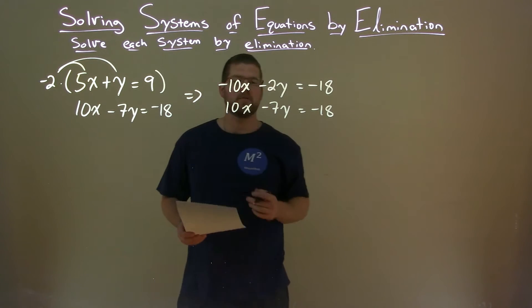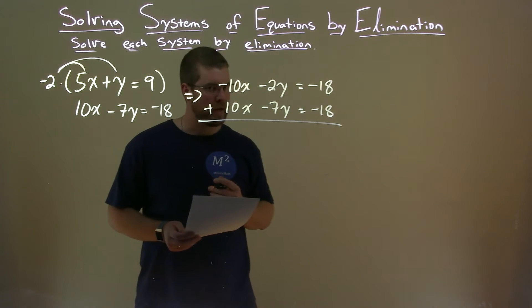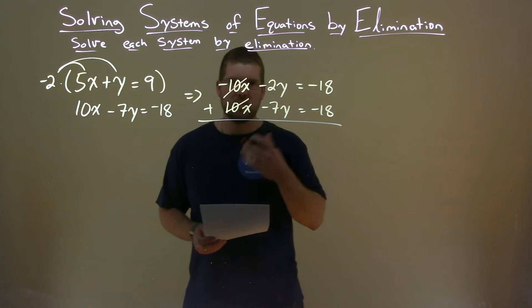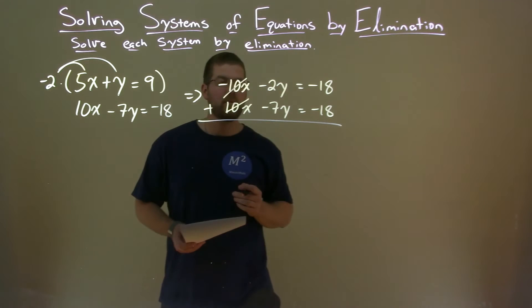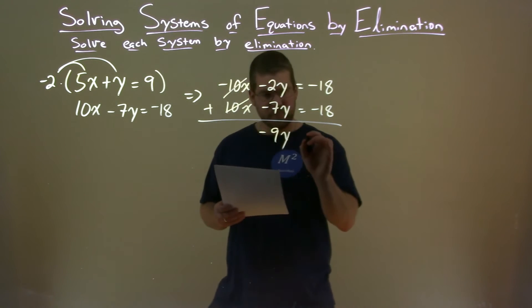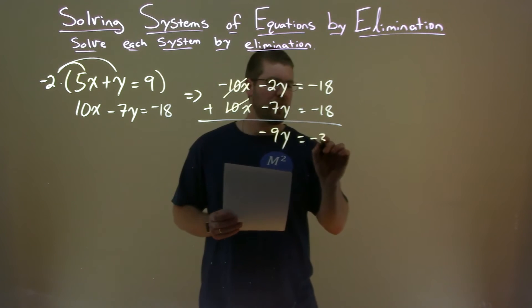And now what we can do is add these two equations together to eliminate the variable x. Negative 10x plus 10x is just 0x. Don't need to write that. Negative 2y plus negative 7y, negative 9y. Negative 18 plus negative 18 is negative 36.